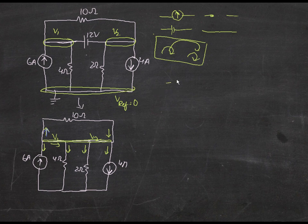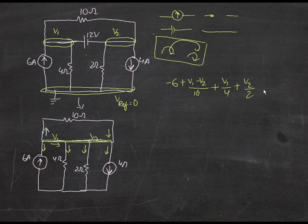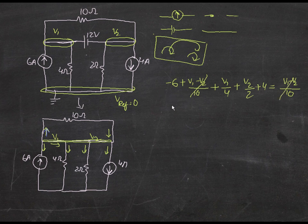The first equation: point the arrows outward. This is v1, this is v2. The first equation is: minus 6 amperes (the current is flowing upwards but the taken arrow points downwards, so minus 6), plus (v1 minus v2) over 10, plus v1 over 4, plus v2 over 2, plus 4 amperes equals (v1 minus v2) over 10. Since that current term appears on both sides it cancels, giving the final first equation: v1 over 4 plus v2 over 2 equals minus 2.